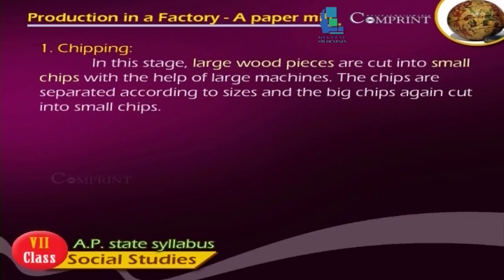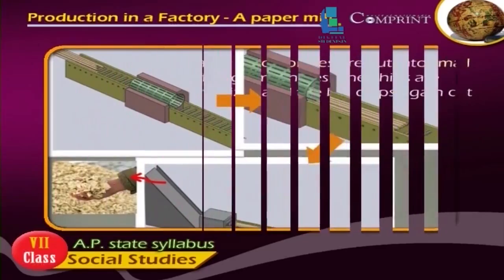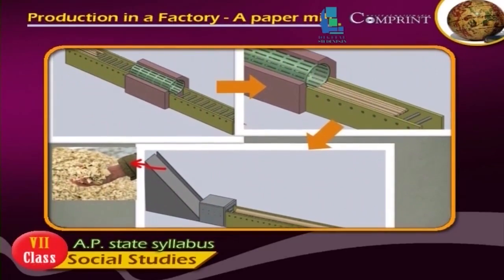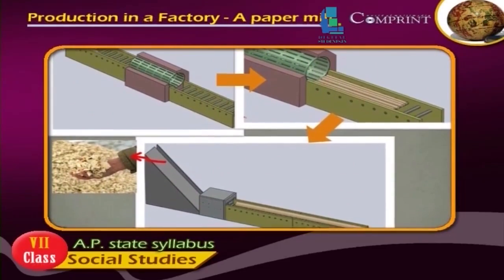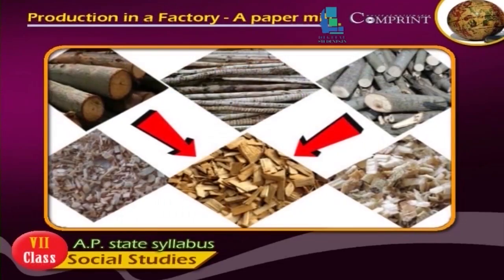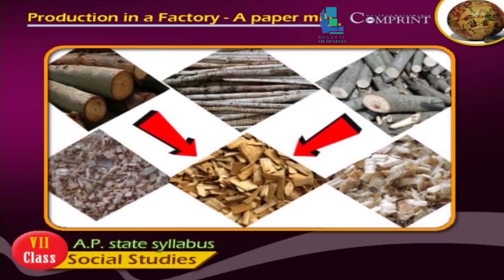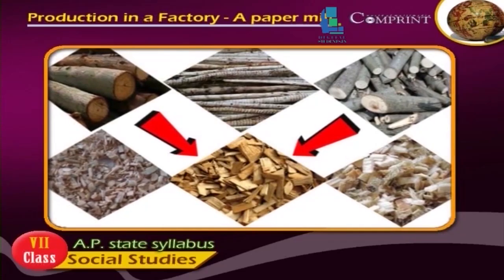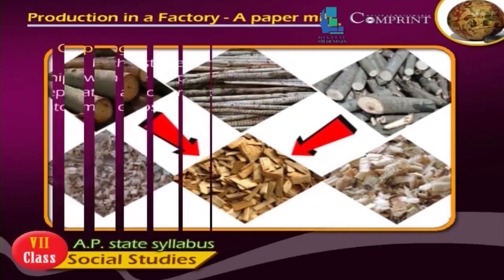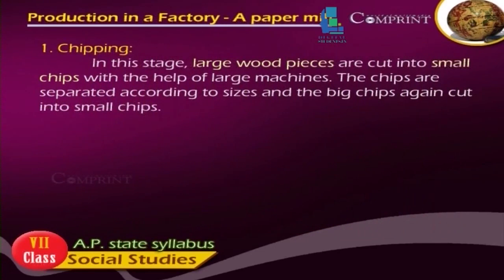Stage 1 — Chipping: In this stage, large wood pieces are cut into small chips with the help of large machines. The chips are separated according to size, and the big chips are again cut into small chips.